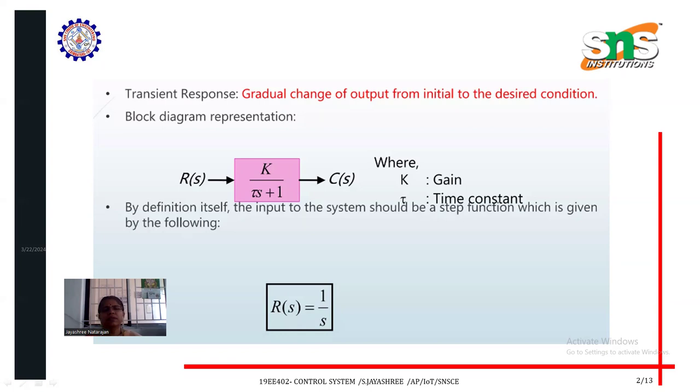See the block diagram of a first order system. Input is R of s, output is C of s. In the transfer function, the value is K divided by tau s plus 1. K is gain, tau is time constant.